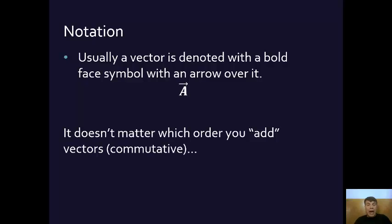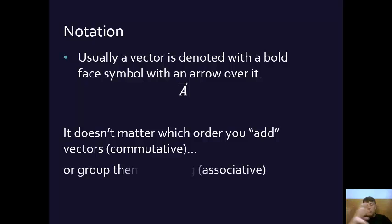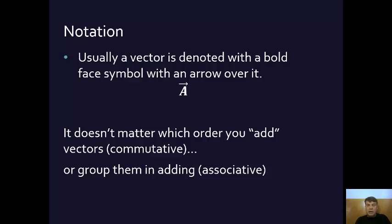It doesn't matter what order you add the vectors together. For example, if I'm trying to get to Starbucks on a corner, I can either cross the street here and go down, or I can go down and cross the street — I end up with the same resultant. That's the commutative property. And it doesn't matter if you group them: if you group A and B directions first and then add C, or do A and then B and C — that's called the associative property. These properties apply for vector addition, not just normal addition.